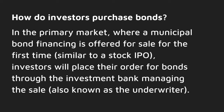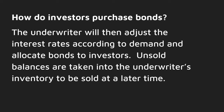In the primary market, where a municipal bond financing is offered for sale for the first time — similar to a stock IPO — investors will place their order for bonds through the investment bank managing the sale, also known as the underwriter. The underwriter will then adjust the interest rates according to demand and allocate bonds to investors. Unsold balances are taken into the underwriter's inventory to be sold at a later time.